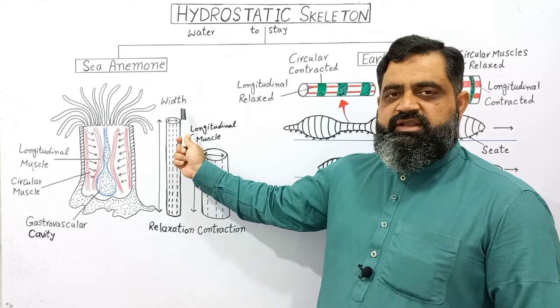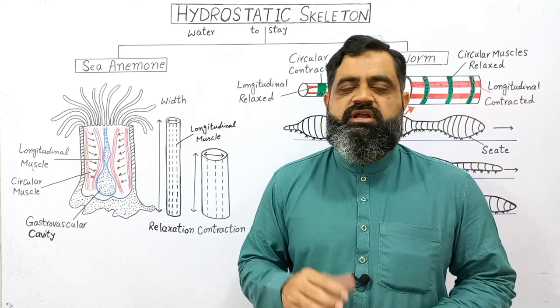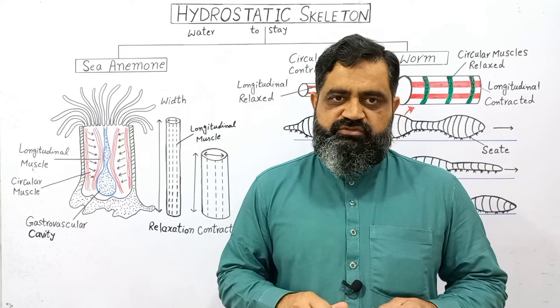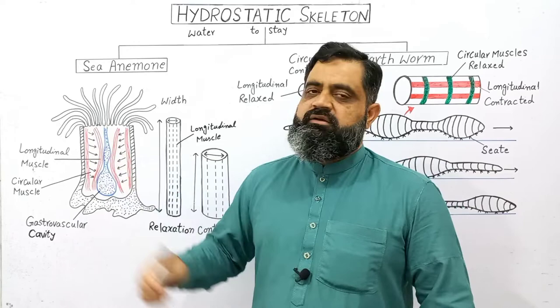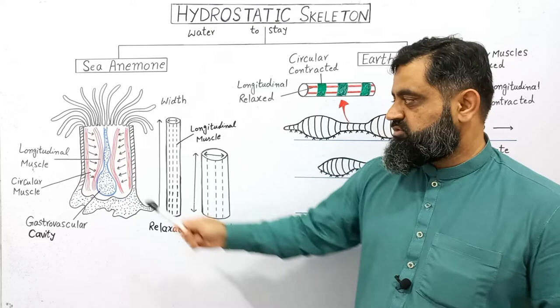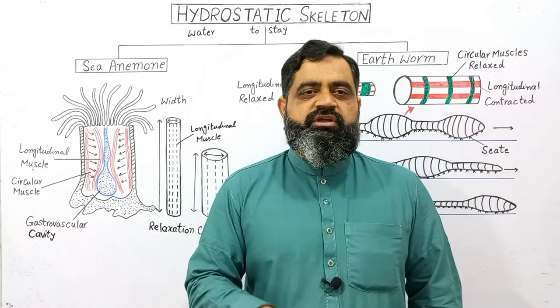During this elongated stage, the animal lives in daylight and performs daily activities like feeding, reproduction, and respiration. But when there is danger, the animal opens its mouth and contracts its longitudinal muscles while relaxing the circular muscles. Water moves out of the gastrovascular cavity, the width of the body increases while the length decreases, and the animal becomes soft and moves toward the bottom to stay there until the danger is over.